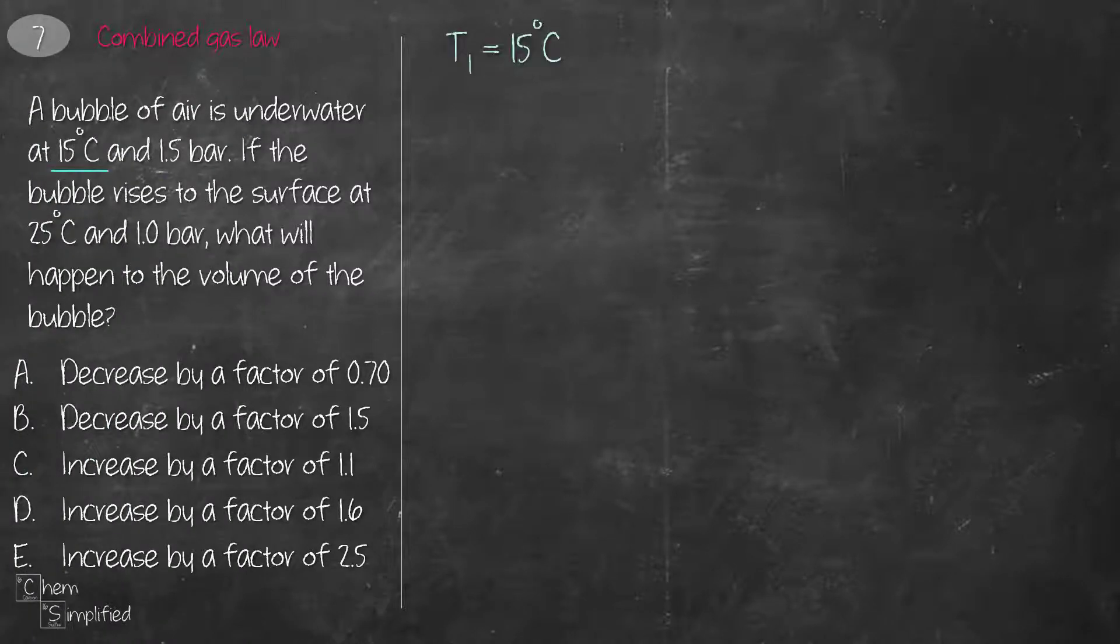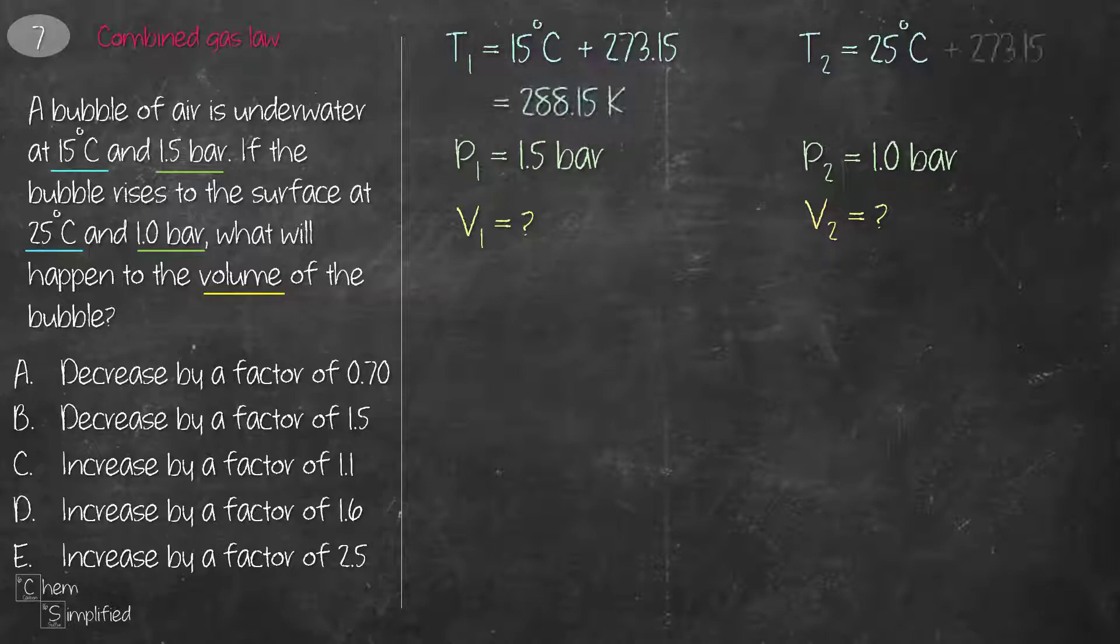This is a combined gas law question. The question gives us 15 degrees celsius and 1.5 bar. That's T1 and P1. And then it tells us that the bubble rises to the surface, and now we have a new temperature which is 25 degrees celsius T2 and 1 bar P2. It asks us what will happen to the volume of the bubble, which we don't have any information. We'll just leave it as V1 and V2. Since the question gives us temperature in Celsius, we're going to need to first convert it to Kelvin by adding 273.15.